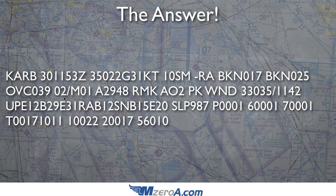This improper-fraction-looking thing with a letter in it — what is this? That is our temperature followed by our dew point, in degrees Celsius. It's 2 degrees Celsius at Ann Arbor, Michigan. The M means minus — it's a negative number — so the dew point is minus one. Remember: close temperature and dew point is bad. Here we have a pretty close temperature and dew point, and just look at what's happening weather-wise.